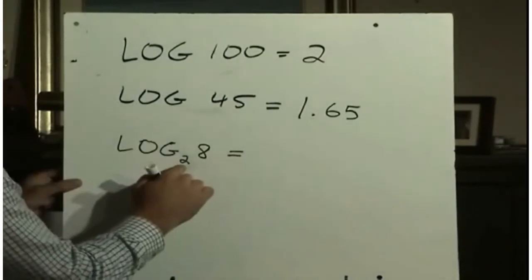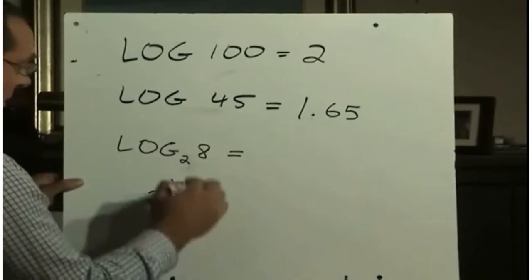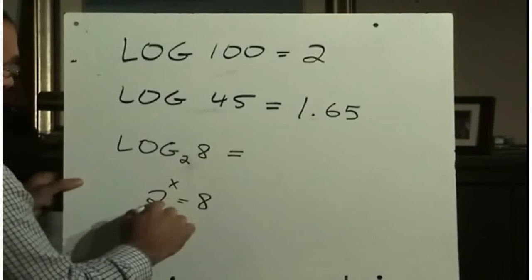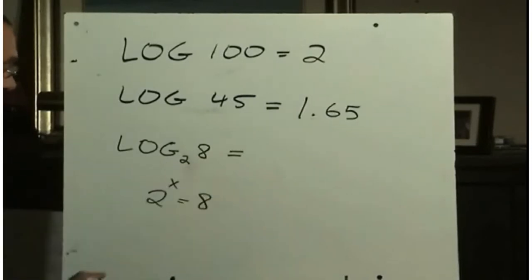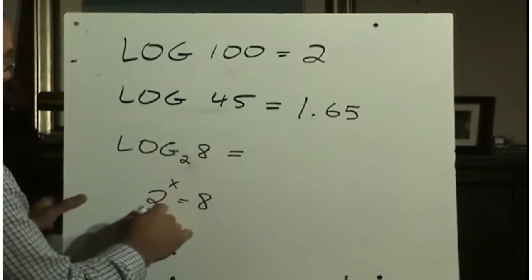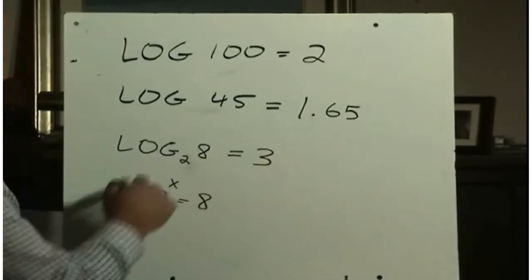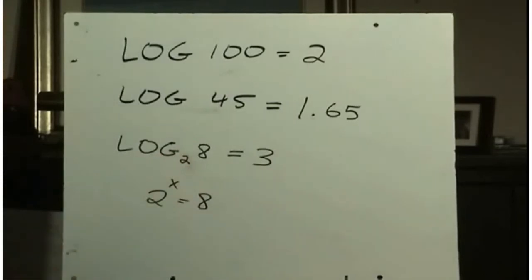This is a base 2 logarithm. So again, a logarithm is just an exponent. The question would be, what exponent, when there's a base of 2, will equal 8? Well, if you think about this for a bit, 2 times 2 times 2 is 8. So in other words, 2 cubed is 8. So log base 2 of 8 is equal to 3.